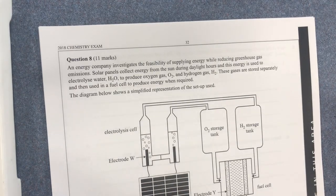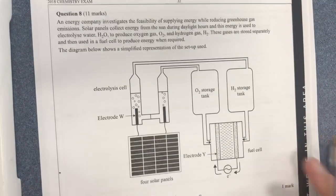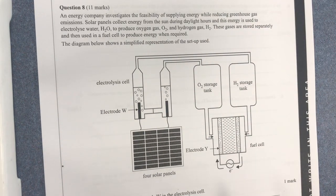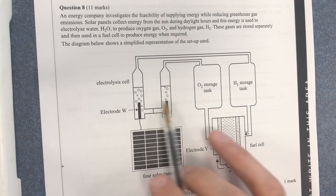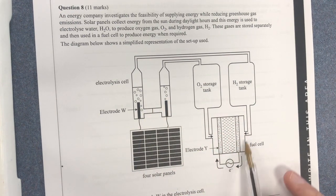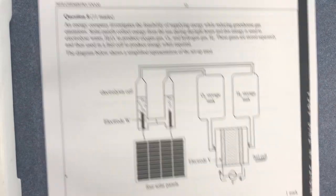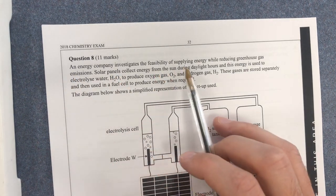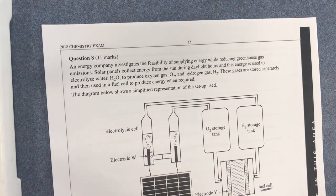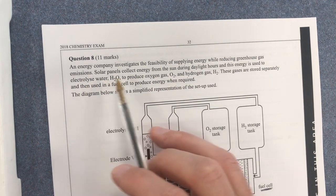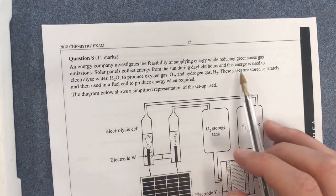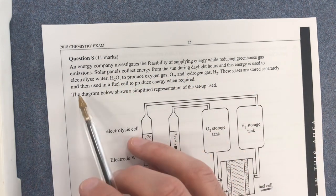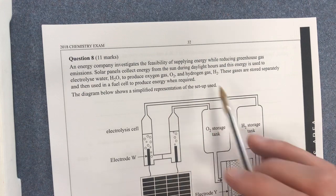Alright, so question 8 on the 2018 VCAR exam and it looks like we've got some electrochemistry here. You can see it looks like an electrolytic cell here and a fuel cell. An energy company investigates the feasibility of supplying energy while reducing greenhouse gas emissions. Solar panels collect energy from the sun and electrolyse water, producing oxygen and hydrogen and these are stored separately for use in a fuel cell.